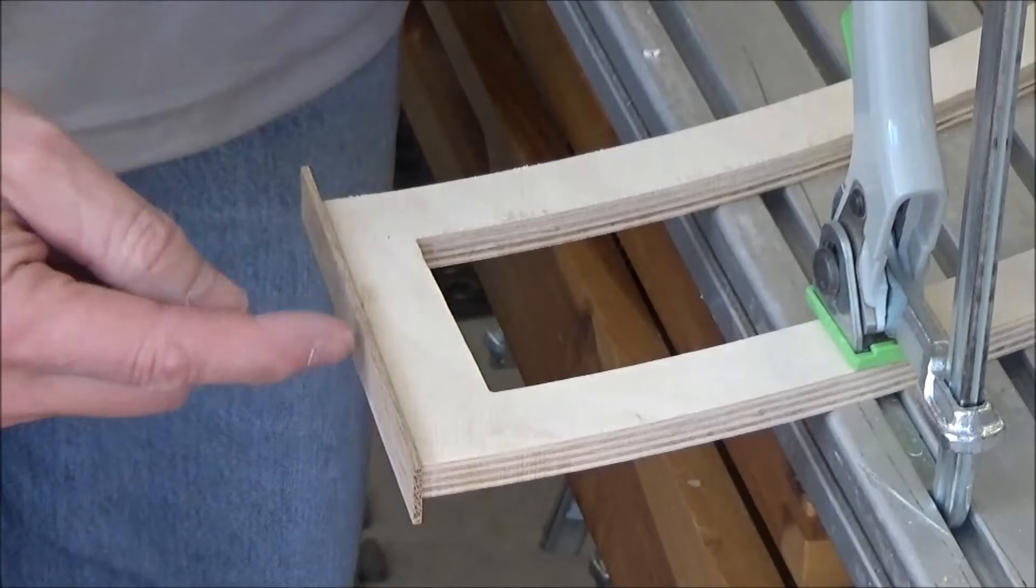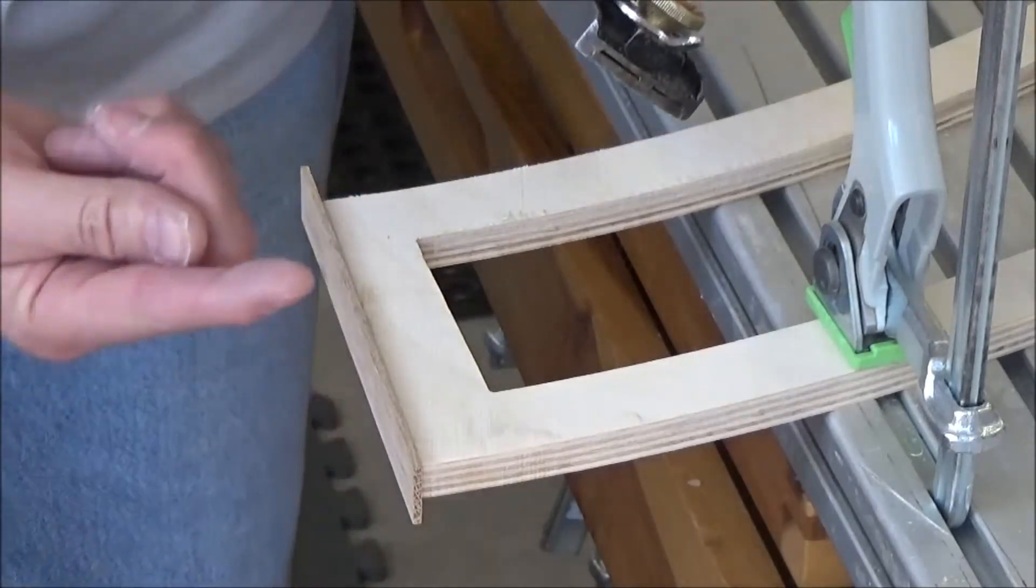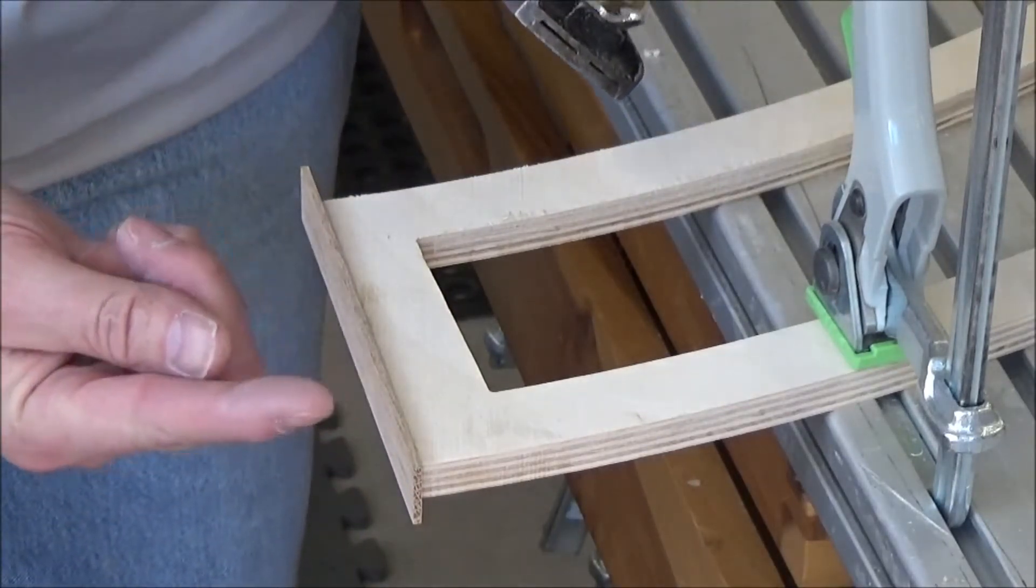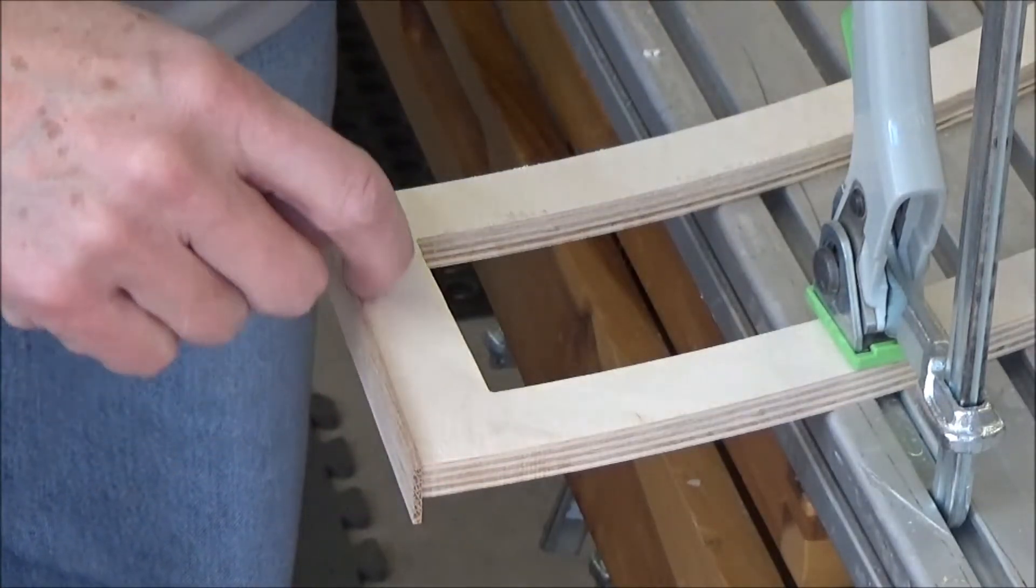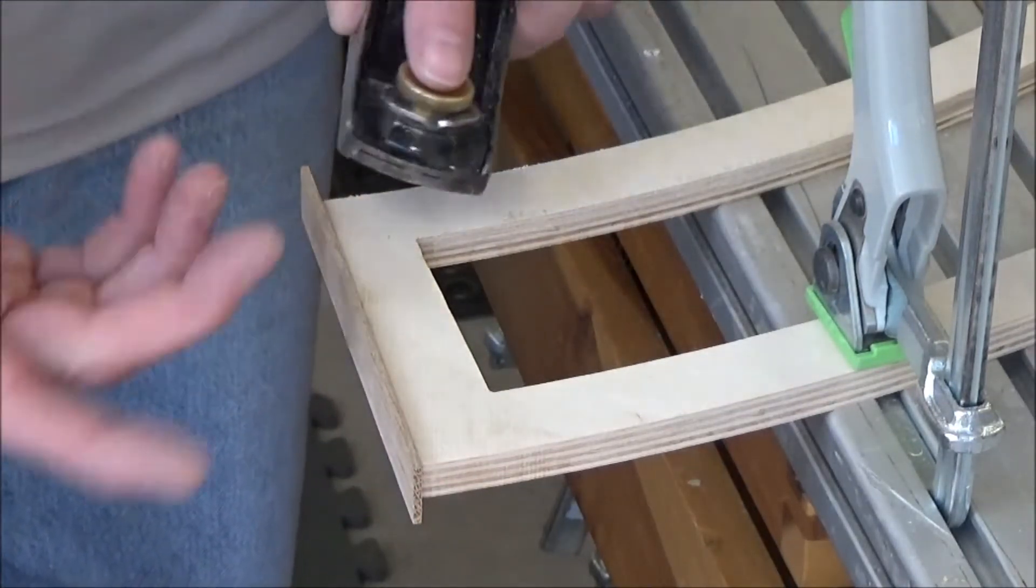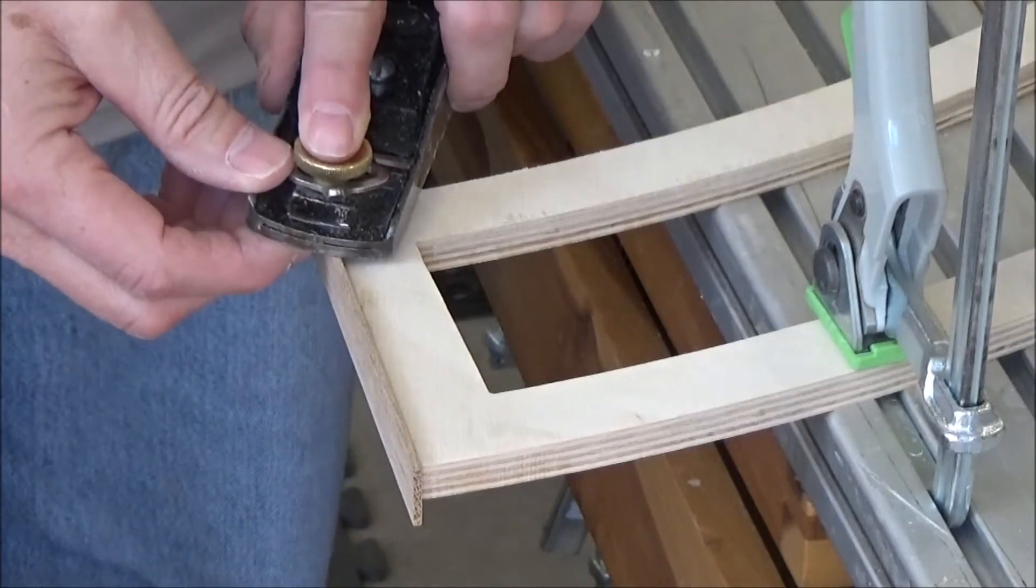You could do it with a router, but you run the risk of, with the grain going this direction on this one and this way on the other, routing against it and chipping that out. With a hand plane, you can control all that.